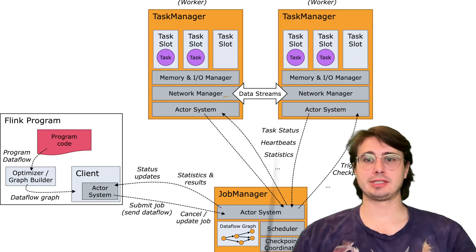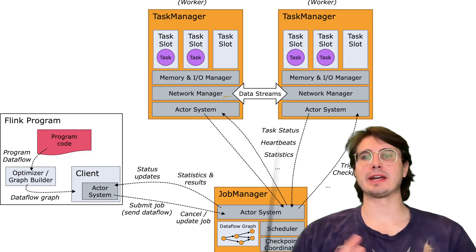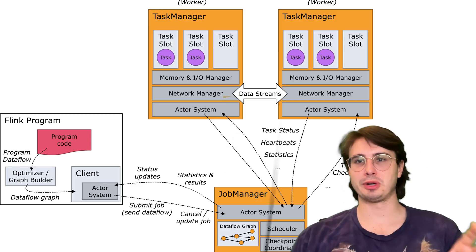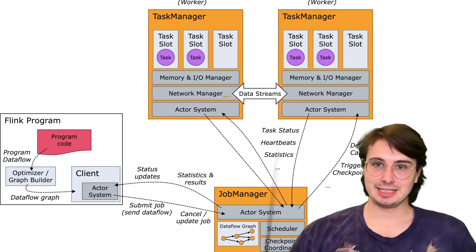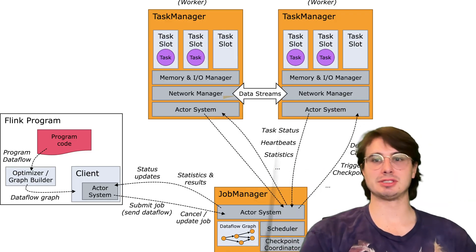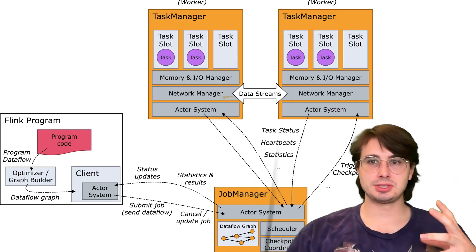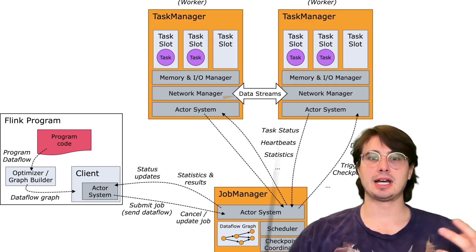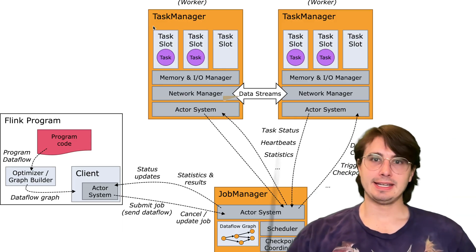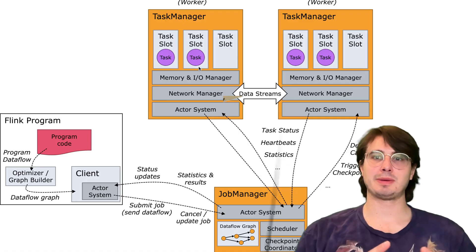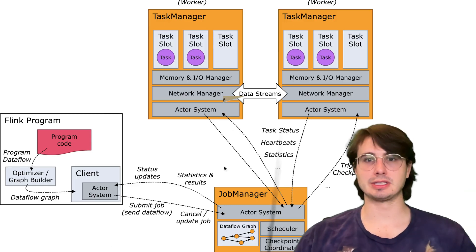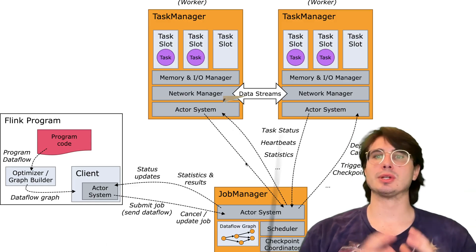The next area to think about when setting up Flink is resource management. The key to successful memory configuration is avoiding both under-provisioning and over-provisioning. Under-provisioning leads to out-of-memory errors and job failures, while over-provisioning wastes resources and increases costs. Start with conservative estimates for all your nodes based on your state size and throughput requirements, then adjust based on monitoring data. Effective resource management means understanding the memory model and how different components utilize different system resources.